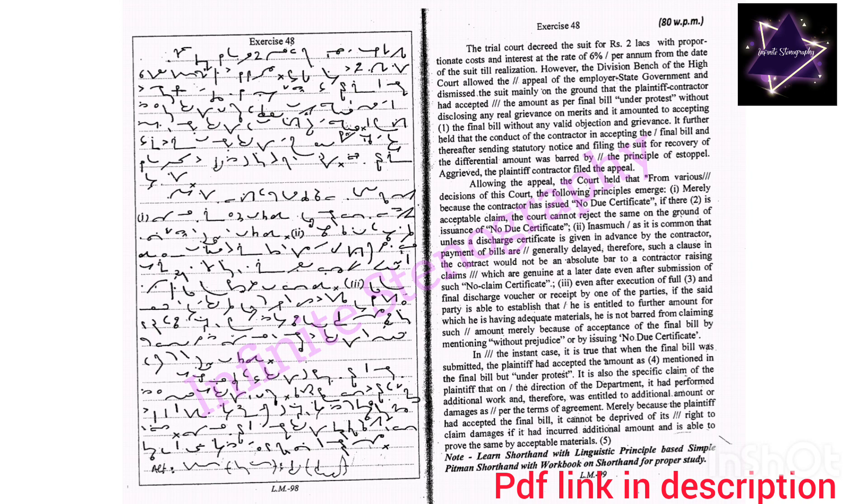Aggrieved, the plaintiff contractor filed the appeal, where allowing the appeal, the court held that from various decisions of this court, the following principles emerge: merely because the contractor has issued no due certificate, if there is acceptable claim, the court cannot reject the same on the ground of issuance of no due certificate in as much as it is common that unless a discharge certificate is given in advance by the contractor, payment of bills are generally delayed.